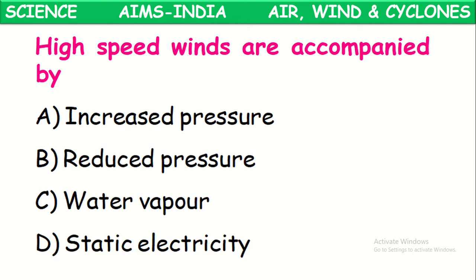High speed winds are accompanied by reduced pressure. Wind always moves from high pressure areas to low pressure areas. The wind speed is because of the pressure difference between two areas — air from a high pressure area rushes to the place where low air pressure exists, creating high speed winds.